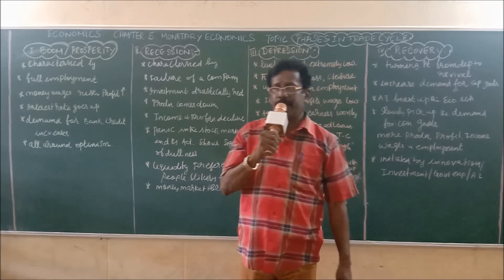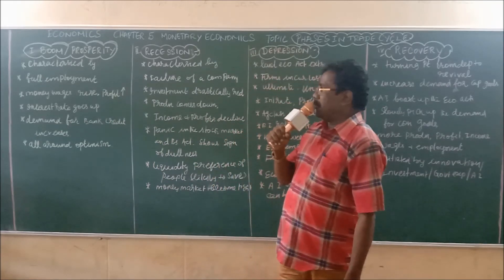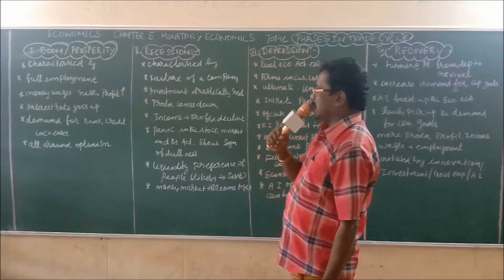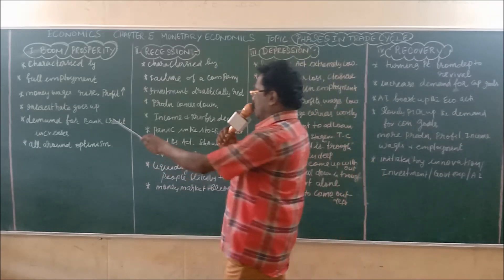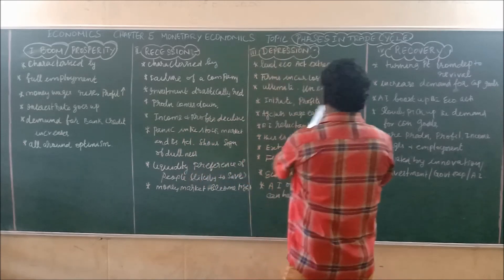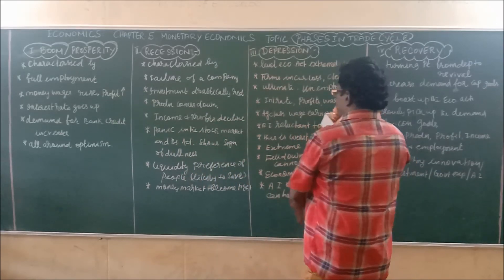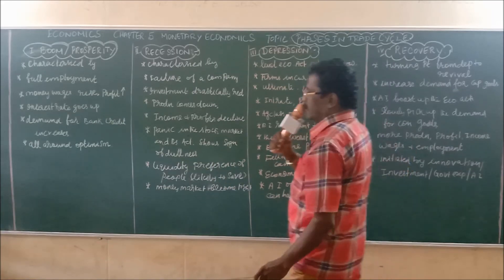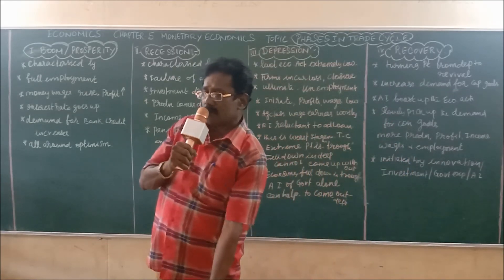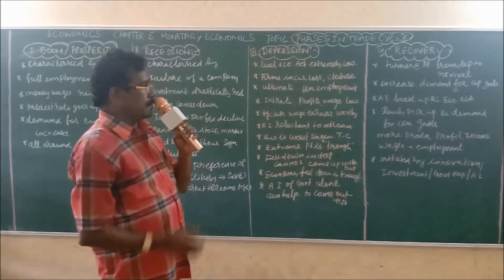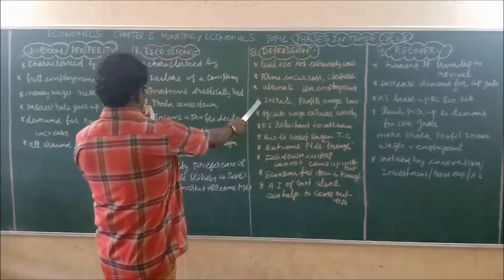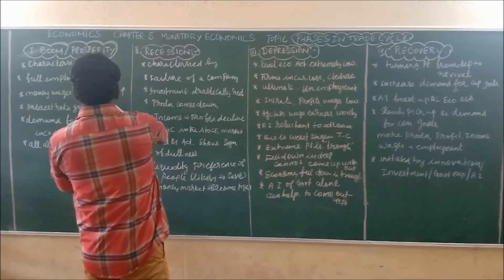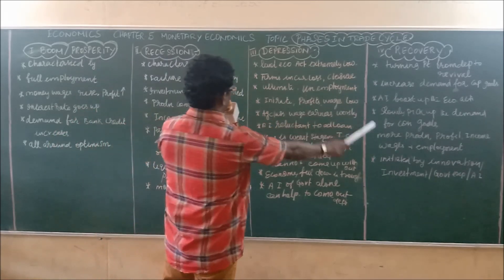Trade cycle consists of four stages or phases and may start at any stage because it is a cycle — boom, recession, depression, recovery. Usually it is described starting from the first stage: depression, then recession, then boom, and then recovery.